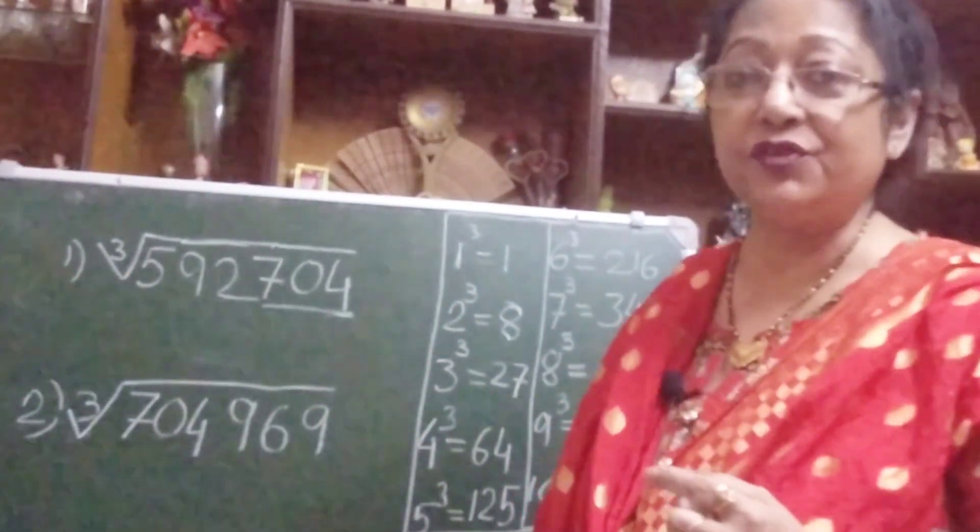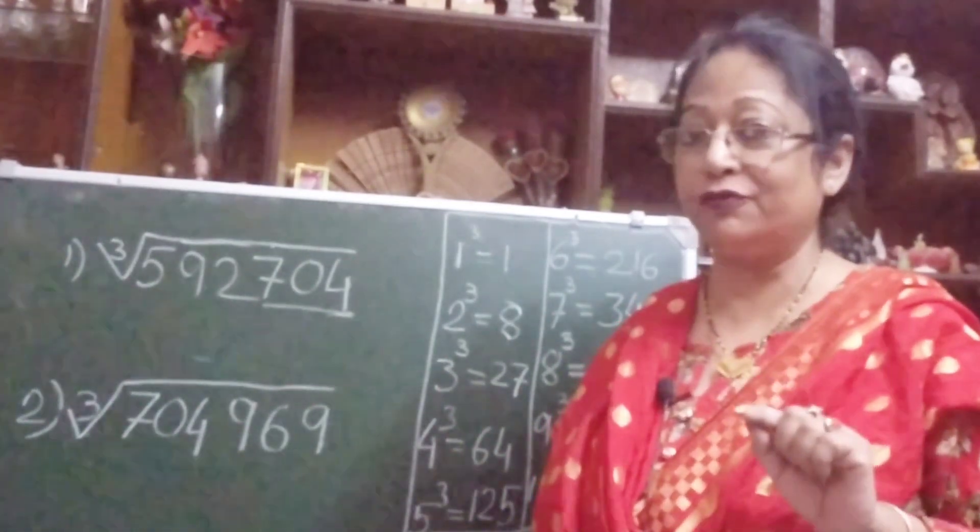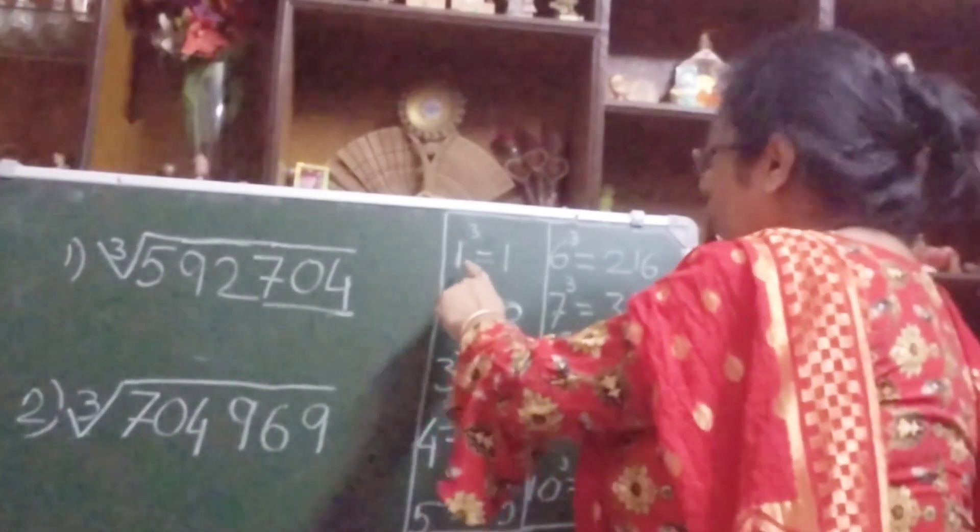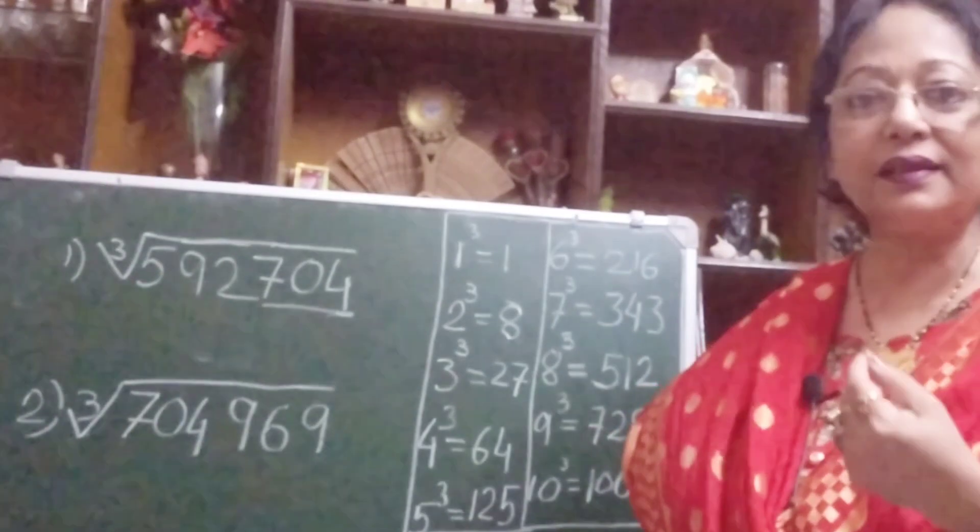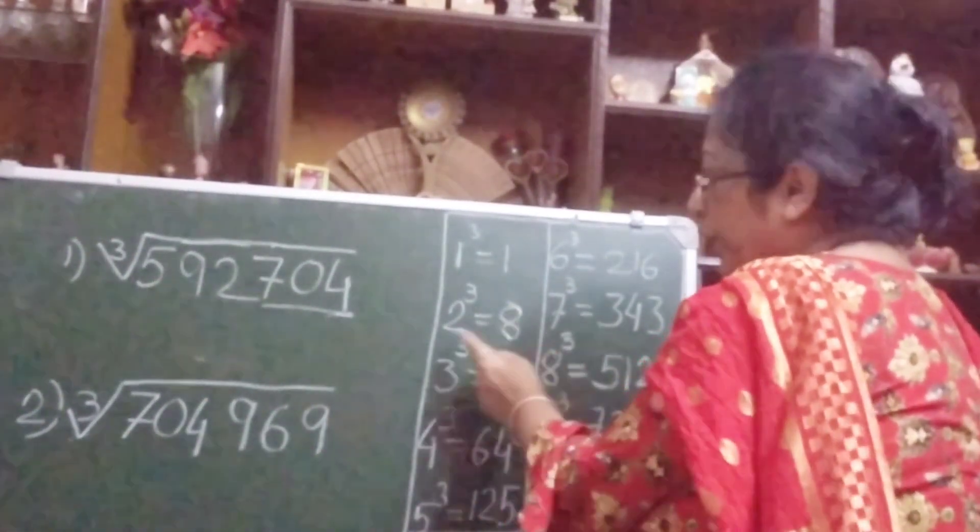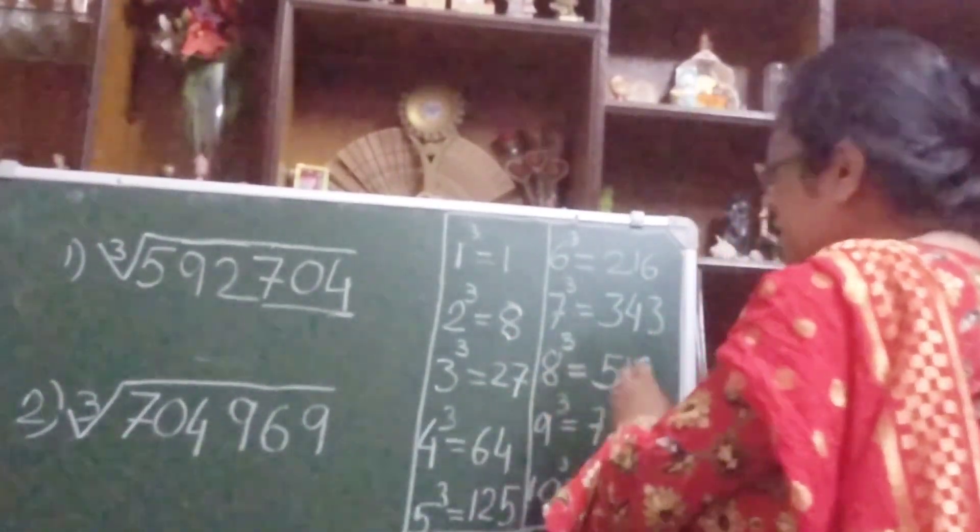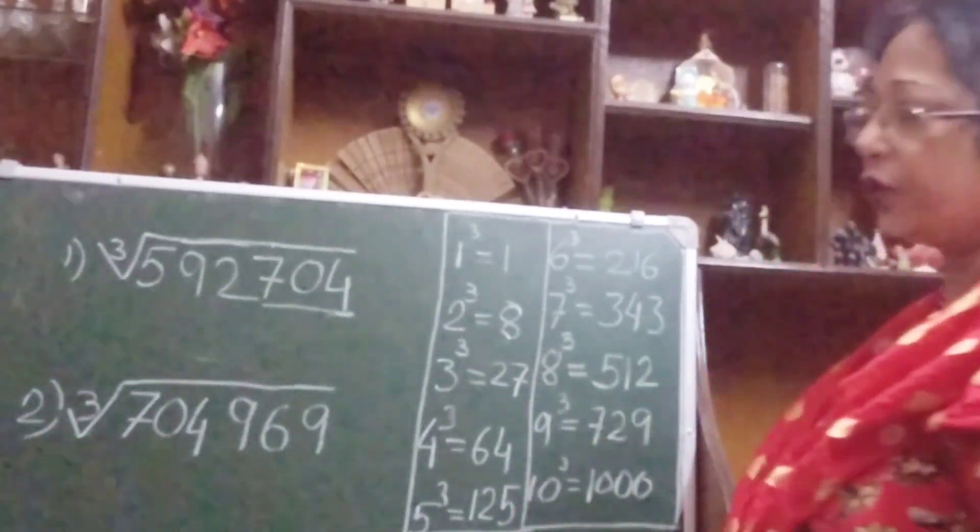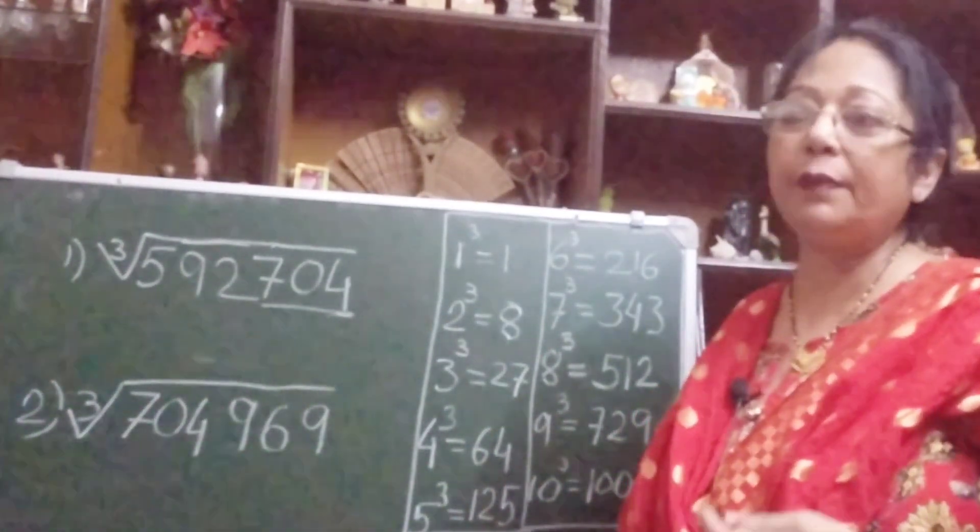Before starting the trick, I will tell you one thing. You have to learn one thing. You have to memorize 1 to 9 cubes. Just say, 1 cube equals to 1, 2 cube equals to 8, 3 cube equals to 27, this way up to 9 cube equals to 729. You have to remember this.